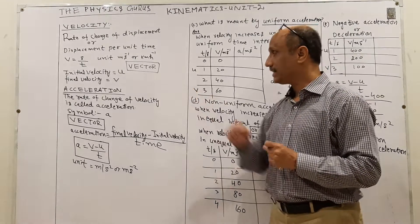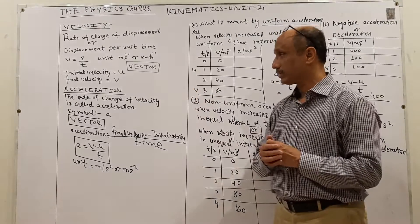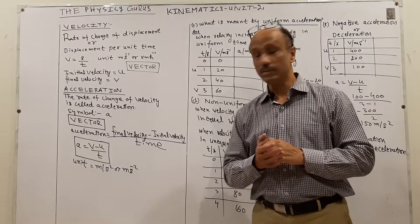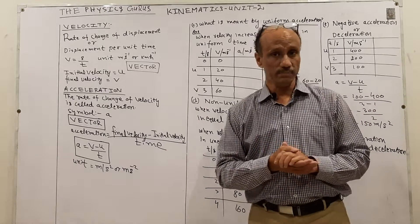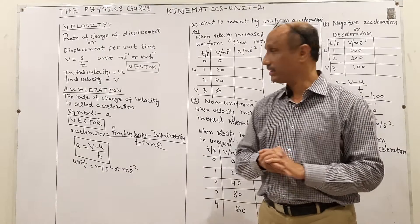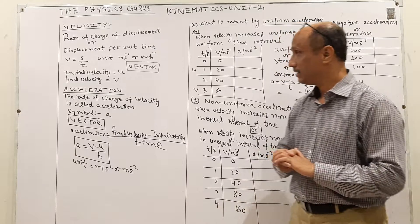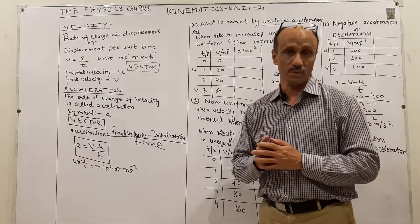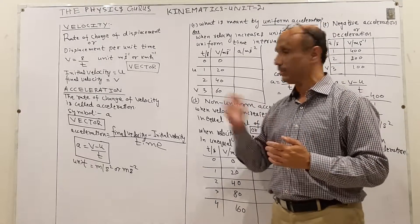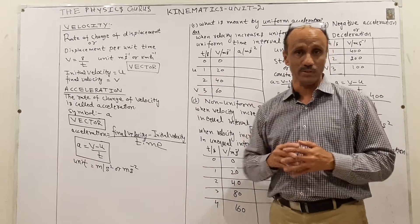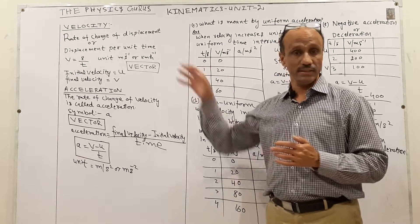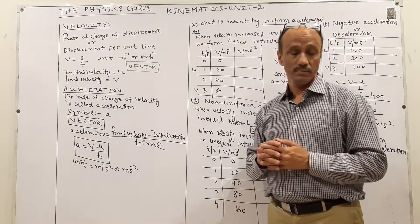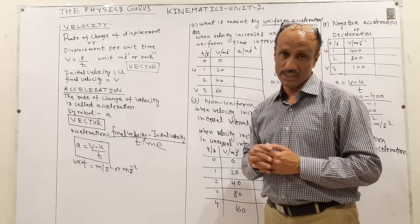Acceleration is the rate of change of velocity. Its symbol is small a. Acceleration is a vector quantity because velocity is a vector quantity, so acceleration will also be a vector quantity.